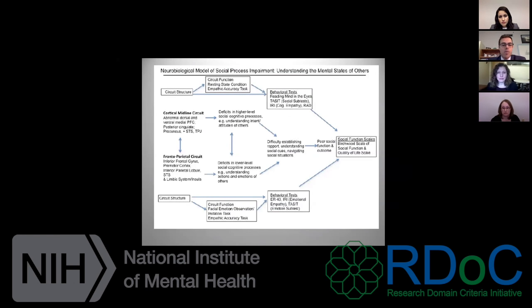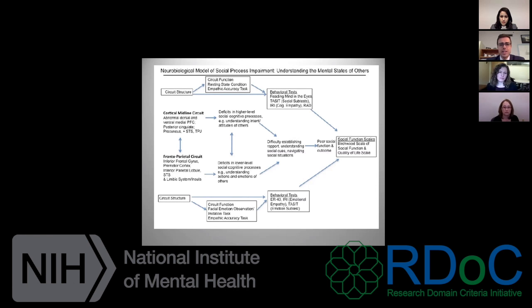We built a model when writing the grant of hypotheses we were testing. We are hypothesizing that there are some circuits — including the frontal parietal circuit, possibly on the right side of the brain, better known as the mirror neuron or simulation system — that might be related to lower-level social cognitive processes like basic emotion understanding. A cortical midline circuit and some lateral parietal temporal regions might be related to higher social cognitive processes more related to understanding the higher-level intent and attitudes of others. We're also relating that to functional outcome.